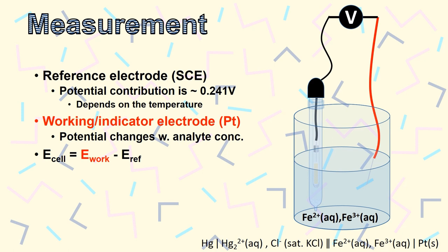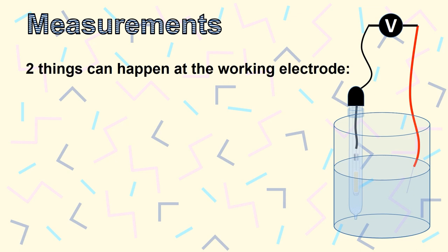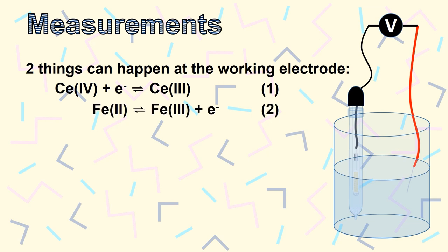This experiment involves two half-reactions. Cerium(IV), which can be reduced at the working electrode, and iron(II), which is oxidized at the same location. Both of these half-reactions are happening at the working electrode.